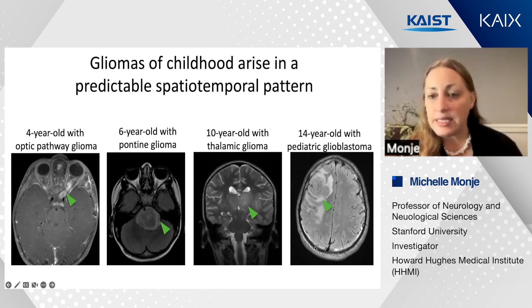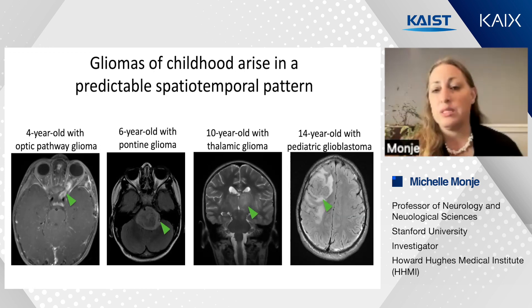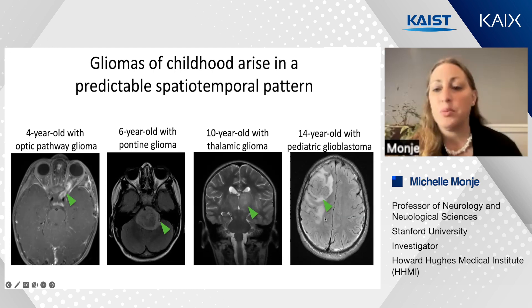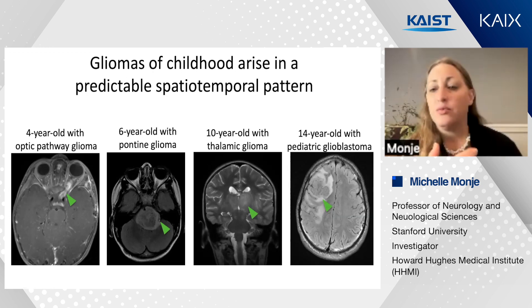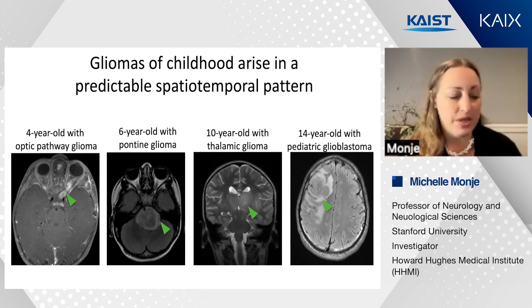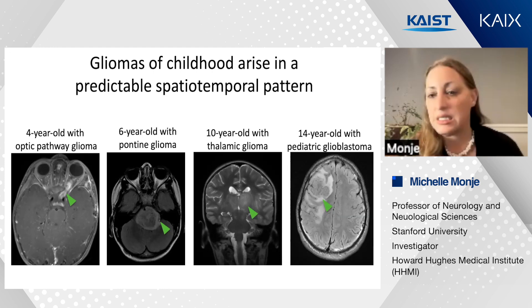In adolescence and young adulthood, the pattern of glial malignancies tends to move away from the midline and instead occur in the cerebral hemispheres. While these pediatric high-grade gliomas like pediatric glioblastoma resemble their adult counterparts radiographically, they are molecularly distinct diseases from adult glioblastoma.